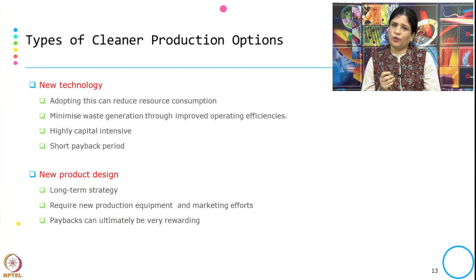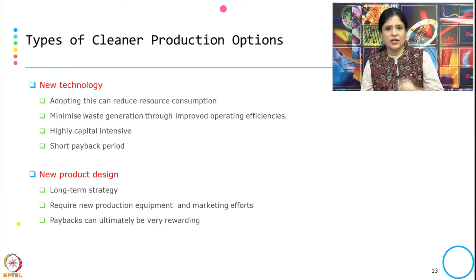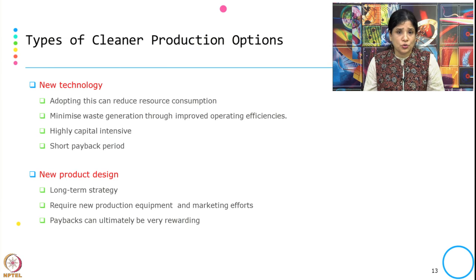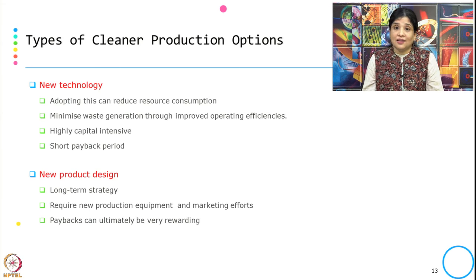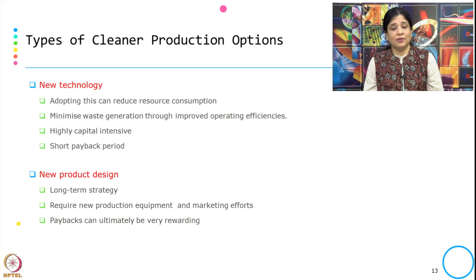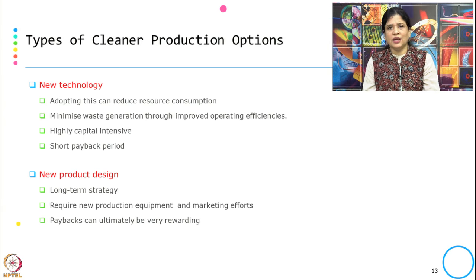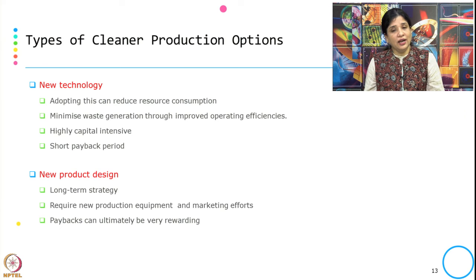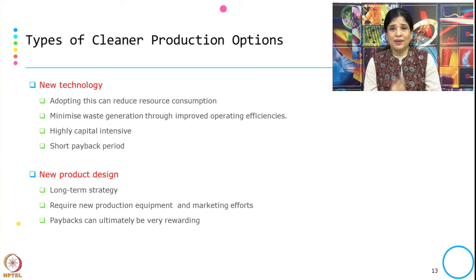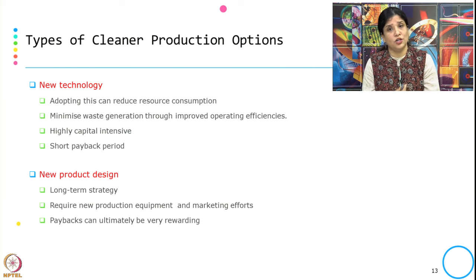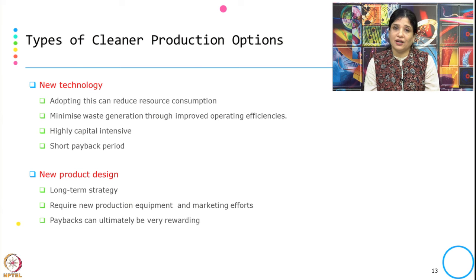The fourth cleaner production option is new technology. By adopting new technology, we can reduce resource consumption through advanced technology and minimize waste generation through improved operating efficiency. This option is highly capital intensive, but the payback period is typically short. The fifth is new product design — a long-term strategy requiring new production equipment and marketing effort. It may also be capital intensive, but if the product does well in the market, the payback is ultimately very rewarding.